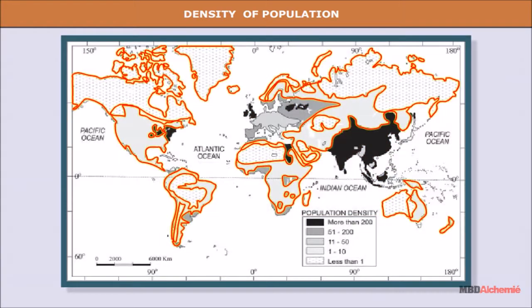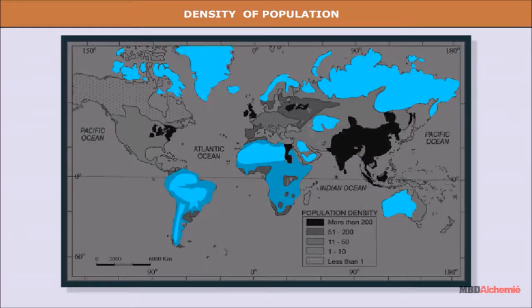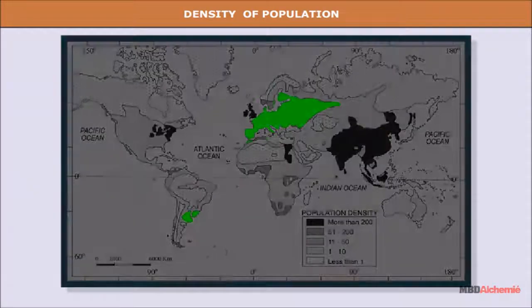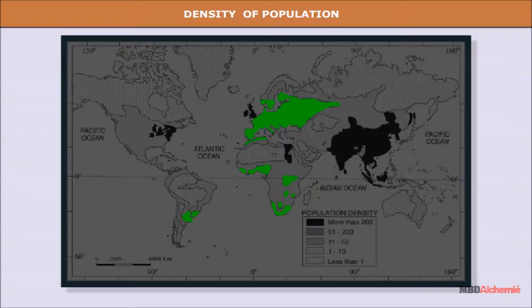Regions like those near the north and south poles, high rainfall zones near the equator, and the hot and cold deserts have very low density of population. In between these two types are the areas of medium density.